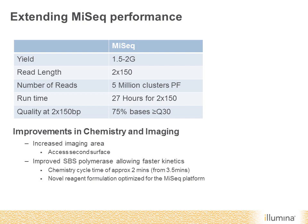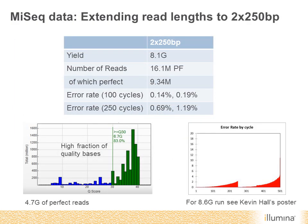Novel reagent formulations and increasing the imaging area by accessing the second surface on the flow cell also contribute. Data from one of the paired 250 base runs shows a yield of eight gigabases from 16 million clusters passing filters. A large number of those were perfect, and the error rates are very nice — below 0.2% on both read one and read two, with very nice error rates out to 250 cycles and a very high fraction of high quality bases.